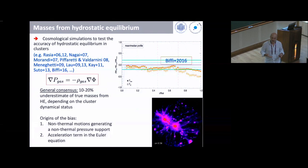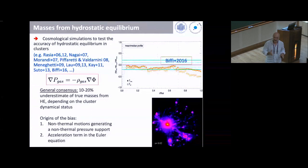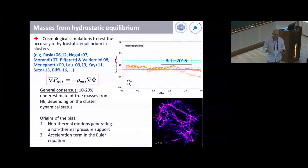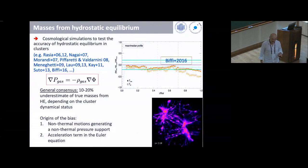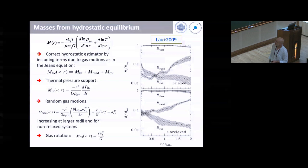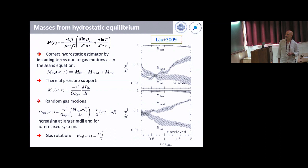The origin of this bias has two main sources: non-thermal motions that generate non-thermal pressure support, and a non-negligible acceleration term in the Euler equation because the cluster is still forming. In a 2009 paper, Lau and colleagues from Andrei Kravtsov's group corrected the hydrostatic estimator by introducing extra terms for gas motions, dividing them into random motions and ordered rotation. The thermal pressure support as usual comes from the pressure gradient; random gas motions are incorporated using the Jeans equation.